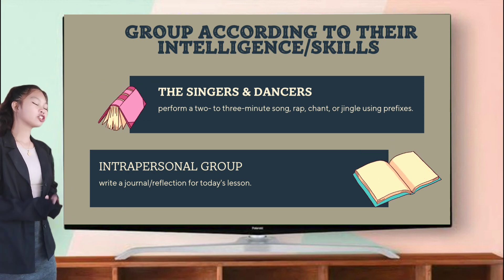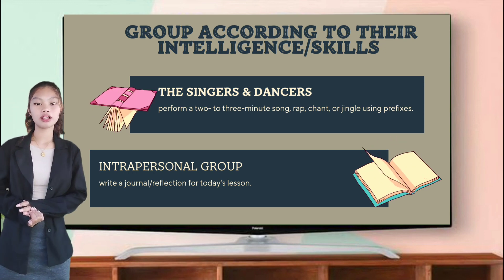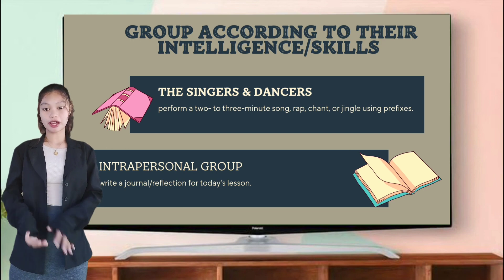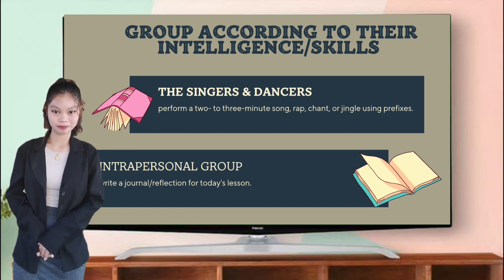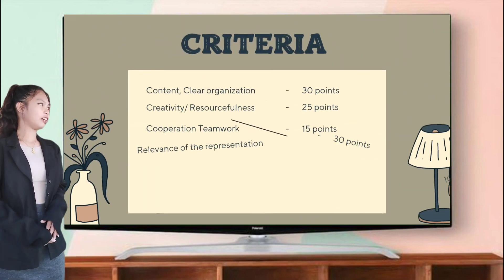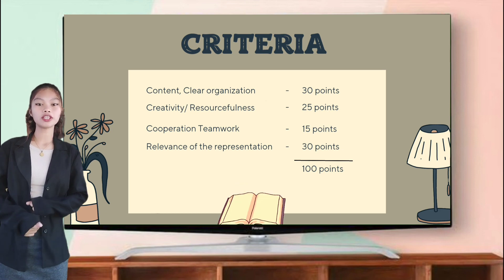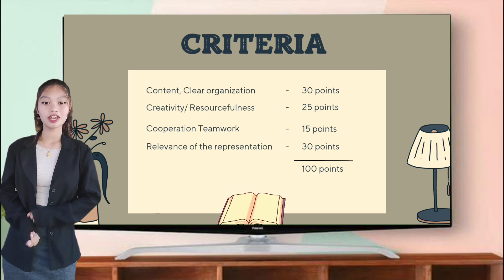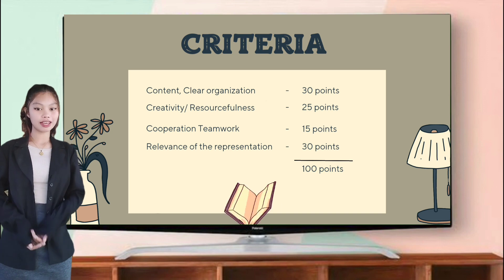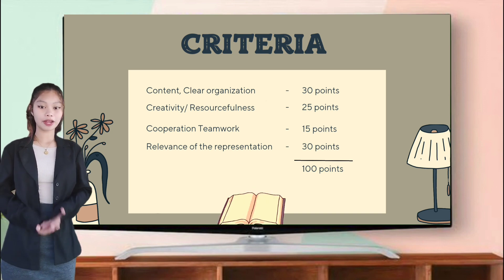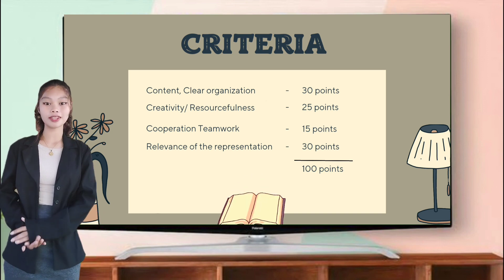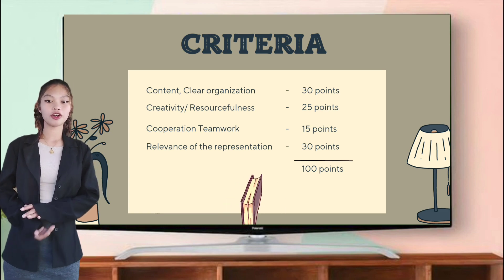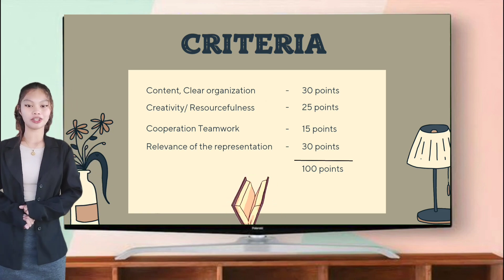Lastly, we have the interpersonal group, who will write a journal or reflection for today's lesson. The criteria are: content and clear organization — 30 points; creativity or resourcefulness — 25 points; cooperation and teamwork — 15 points; relevance of the presentation — 30 points; for a total of 100 points.